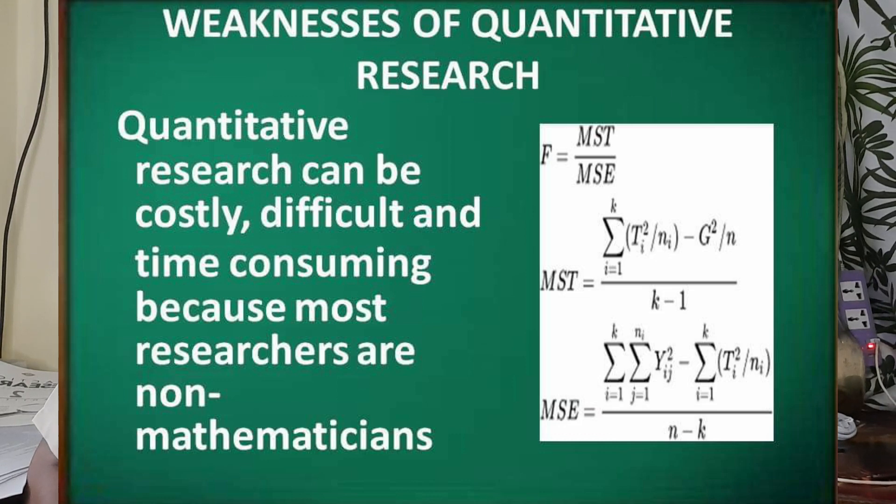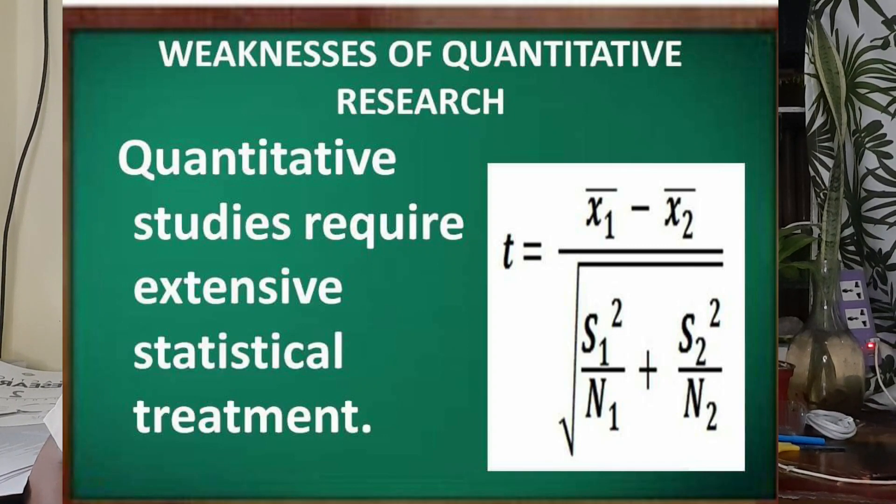The weaknesses of quantitative research: it can be costly, difficult, and time-consuming because most researchers are not mathematicians. For that reason, we need statistics and statisticians — people who will compute your gathered data — and you need to pay them. Quantitative studies also require extensive statistical treatment. As the lesson goes on, we will cover different statistical treatments such as ANOVA and t-test.